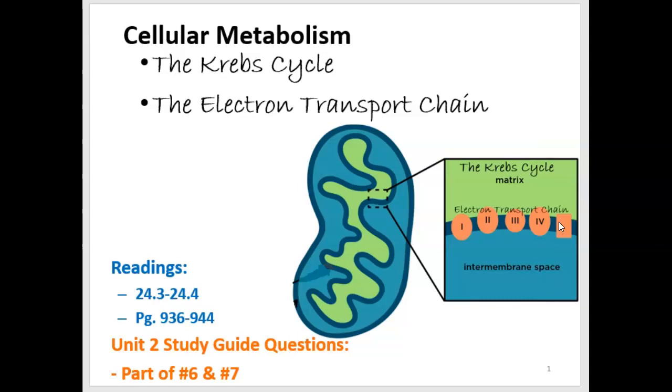Hello, this is Gina Piscitelli with your third lecture on cell metabolism. In this lecture, we're going to talk about the last two steps, steps three and four, in making ATP through aerobic cellular respiration. These two steps are the Krebs cycle and the electron transport chain.